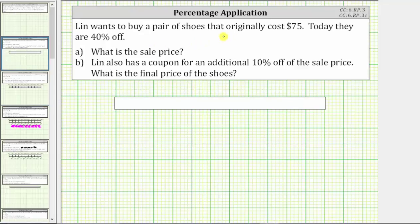Lynn wants to buy a pair of shoes that originally cost $75. Today they are 40% off. Part A: what is the sale price?